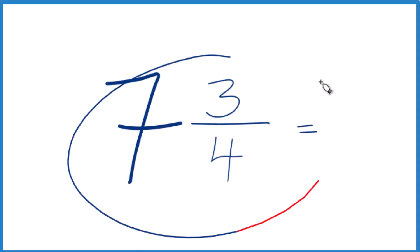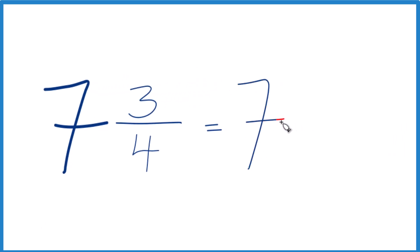If you're asked to convert the fraction seven and three-fourths to a decimal, here's how you do it. We start off with seven, that's a whole number, so we're just going to keep that as seven.